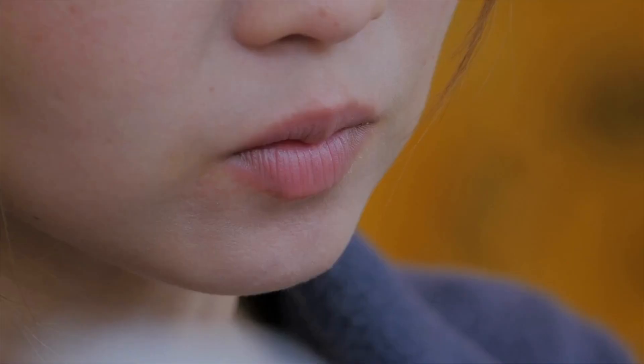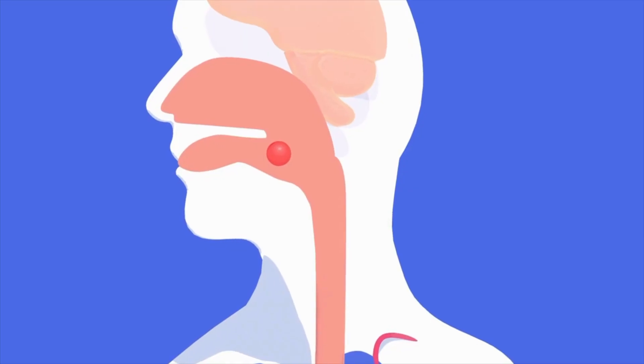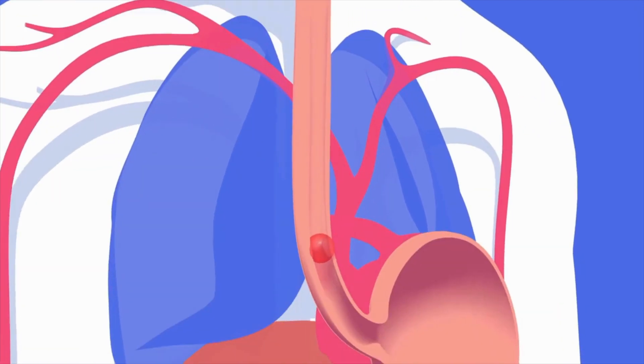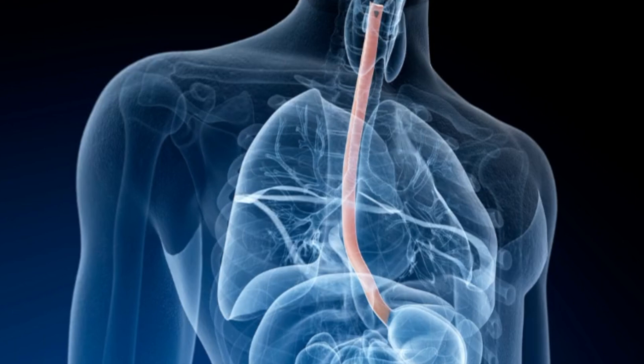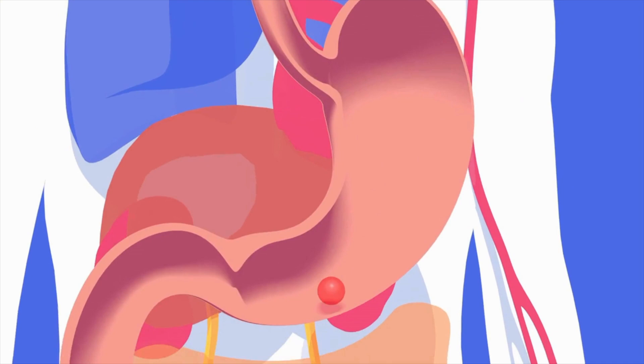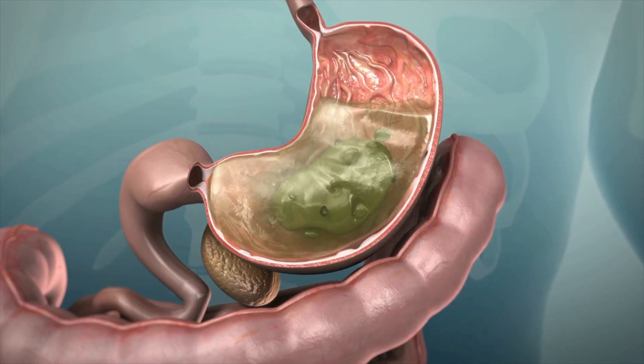Before we go further into ulcerative colitis, a really good way to understand this is by thinking about the whole digestive system and the process involved. It all starts in our mouth where we chew our food into smaller chunks. After chewing, the food is pushed down your throat into a long tube called the esophagus, which helps move food down from the mouth to the stomach by a wave-like motion. When the food enters the stomach, strong acids mix the food and help to break it down even more.